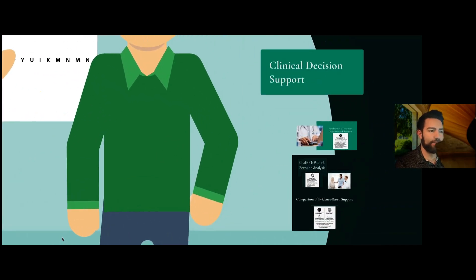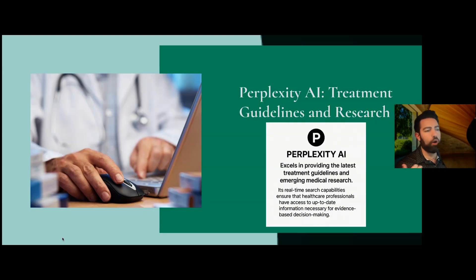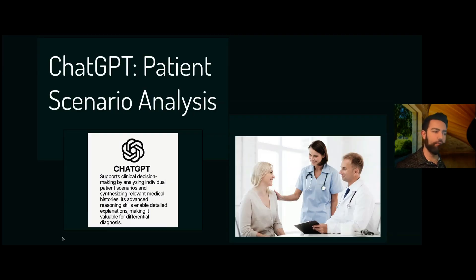Perplexity is very good at providing the latest treatment guidelines and emerging medical research — it's up to date and gives you all the sources. For example, if you have a patient with heart failure and want to know the latest guidelines for heart failure management in 2025, go to Perplexity, have it pull up those sources, and then see which group your patient falls into.